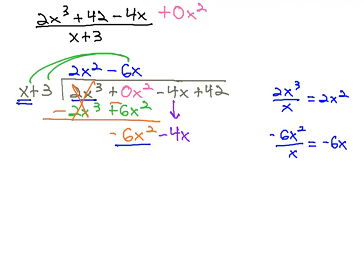Again, we'll distribute the negative 6x through, and as we do, we get negative 6x squared and negative 18x. Again, we change the sign on both terms, making them both positive this time, so that the negative 6x squared subtracts out with the positive 6x squared.